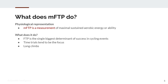MFTP is a measurement of maximal sustained aerobic energy contribution — not anaerobic. It is purely the aerobic side, which often leads people to overestimate their FTP.